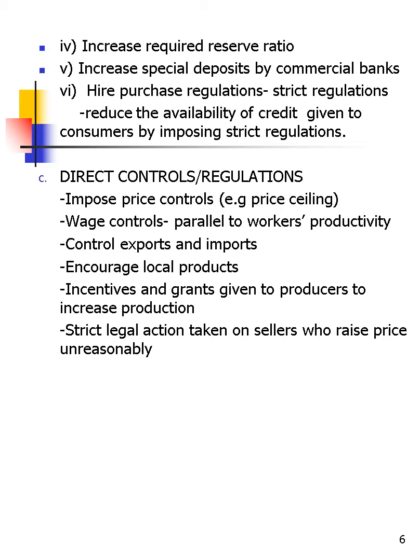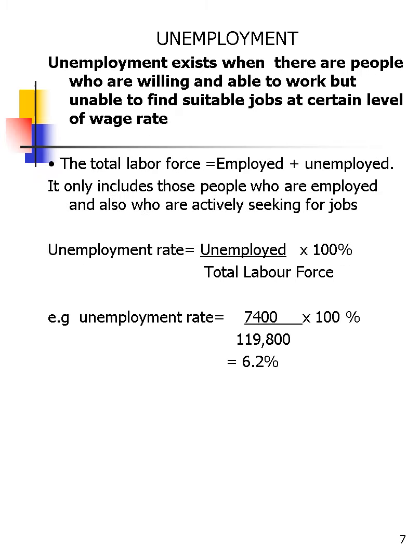Additional tools include increasing special deposits by commercial banks, hire-purchase regulation to tighten controls, and reducing the availability of credit given to consumers by imposing strict regulations. The last tool is direct control. This concludes the topic of inflation, and we now continue with unemployment.